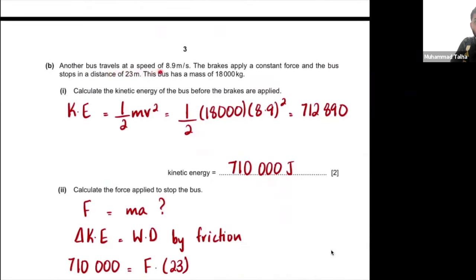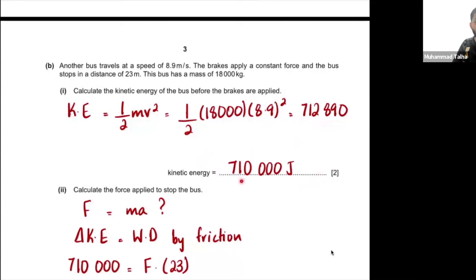Part B: another bus travels at 8.9 m/s; the brakes apply a constant force and the bus stops in 23 metres; the bus has a mass of 18,000 kg. Calculate the kinetic energy before the brakes are applied. Use KE = ½mv². There's likely one mark for writing the formula and another for substituting correctly. The answer works out to 712,890 J — to 2 SF that's 710,000 J, or to 3 SF it's 713,000 J.